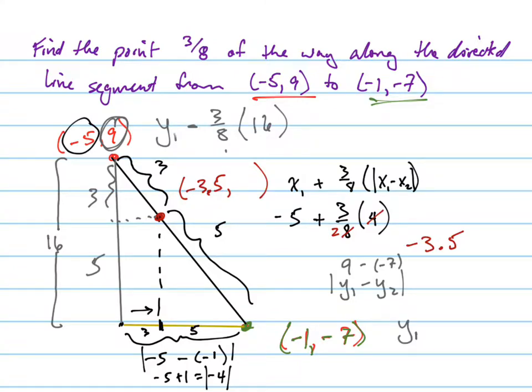So 16, I can cancel that, and that becomes 2. So that's y1, which is 9 minus 3 times 2, which is 6. 9 minus 6 is 3. And I can see that that value is going to be 3 right there. So this point is -3.5 comma 3. And that's the visual understanding of that.